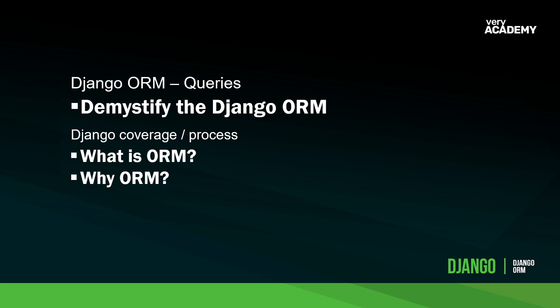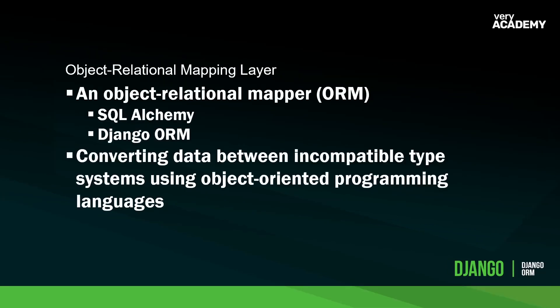The Django web framework includes a default object relational mapping layer — ORM — also referred to as the object relational mapper. The ORM isn't a Django-specific technology; it's something you might find in other languages and frameworks. For example, if you're using the Flask framework, you might utilize SQLAlchemy, which is another ORM. Django has its own ORM — it's a very powerful tool that has evolved over the years since it was created.